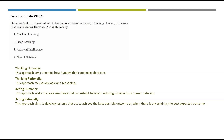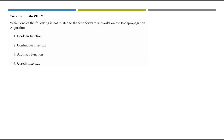Thinking humanly aims to model how humans think and make decisions. Thinking rationally focuses on logic and reasoning. Acting humanly seeks to create machines with behavior indistinguishable from humans. Acting rationally aims to develop systems that achieve the best possible outcome, or under uncertainty, the best expected outcome. Option three, artificial intelligence, is the right answer.